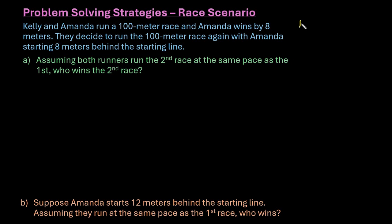That means they started at the same point. When Amanda crossed the finish line, Kelly was still 8 meters back, so there was a difference of 8 meters. Kelly was at 92 meters when Amanda crossed the 100 meters.